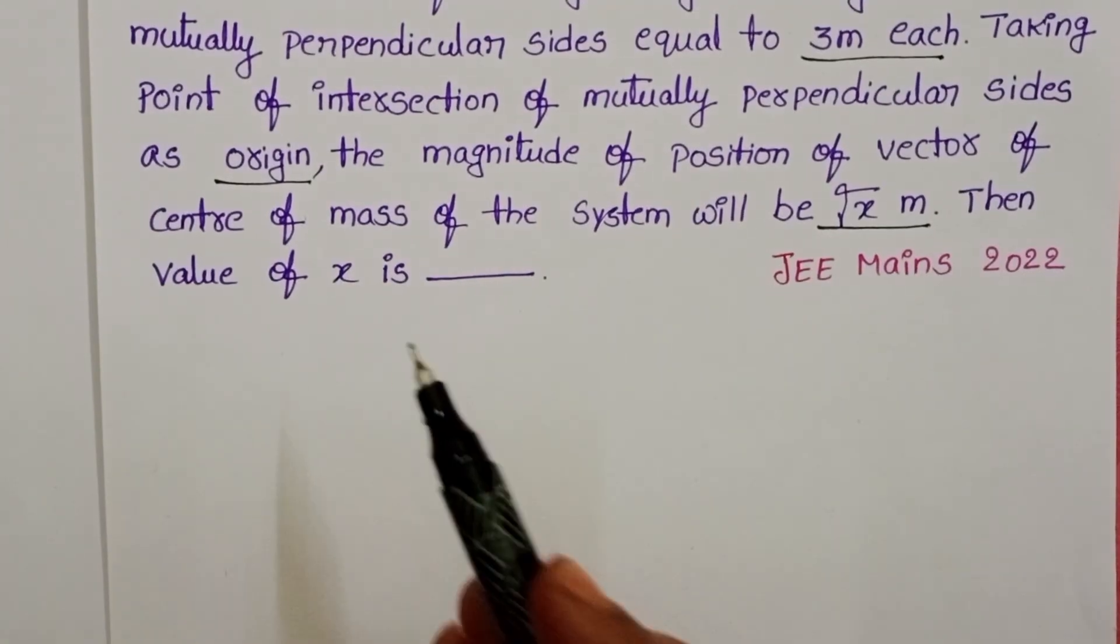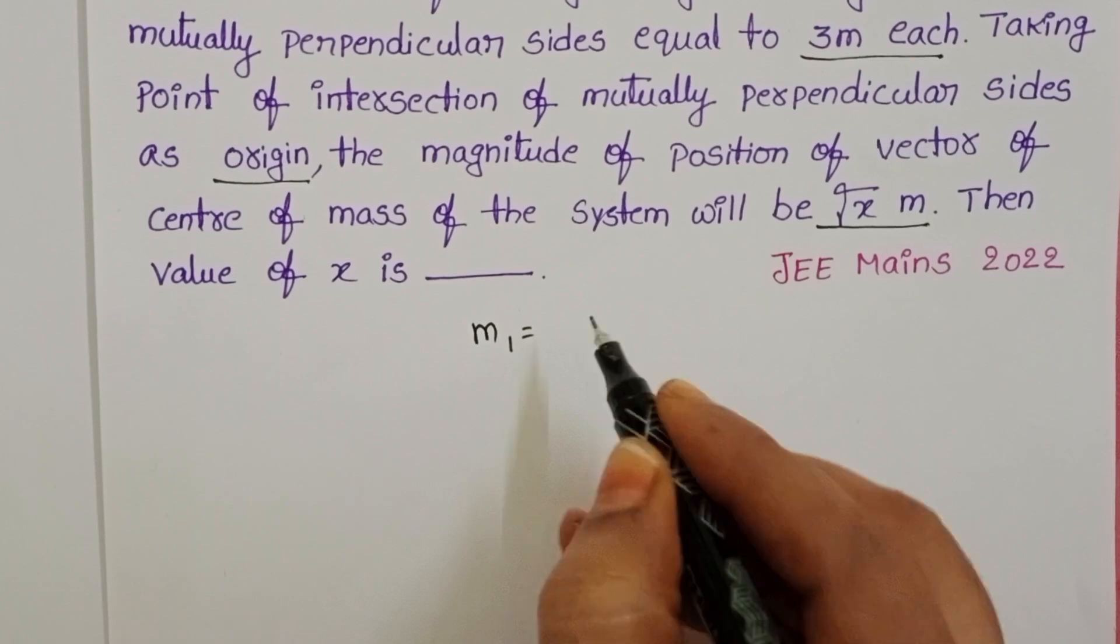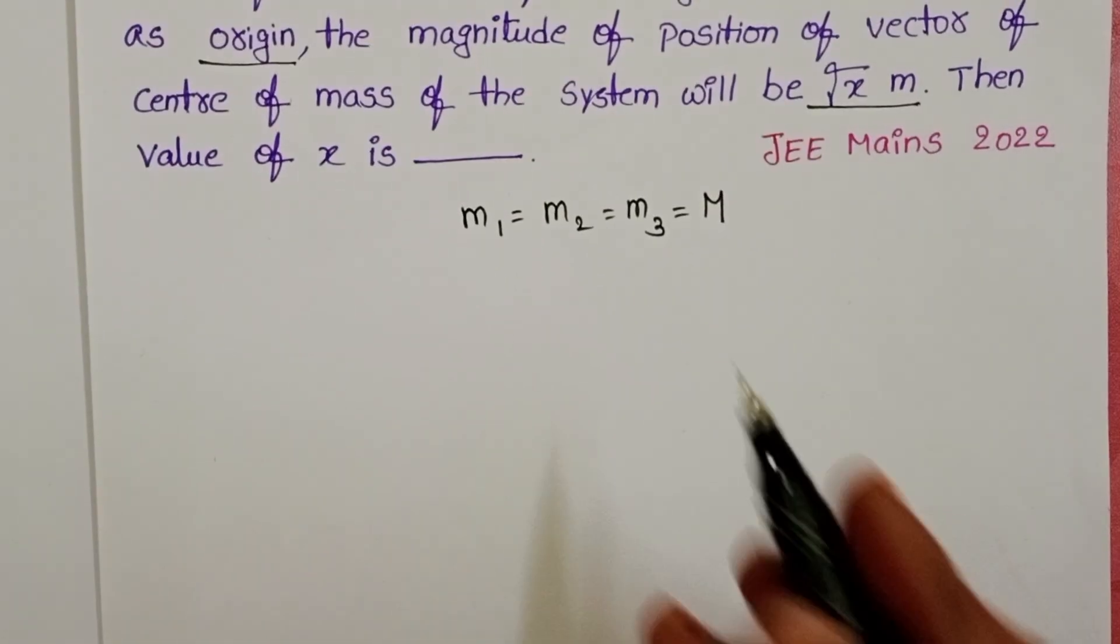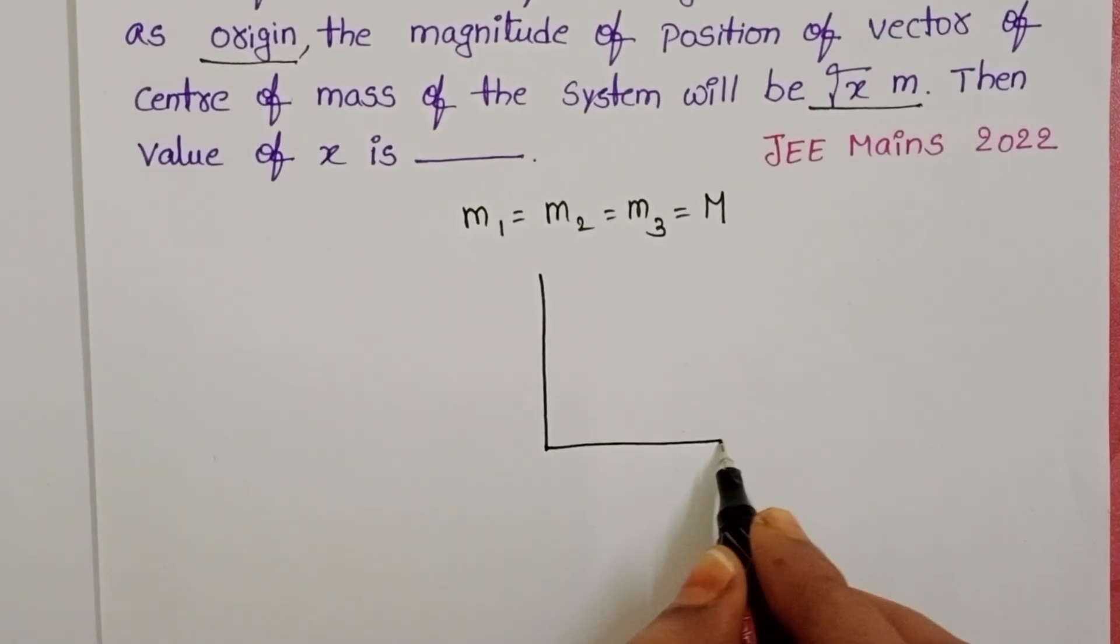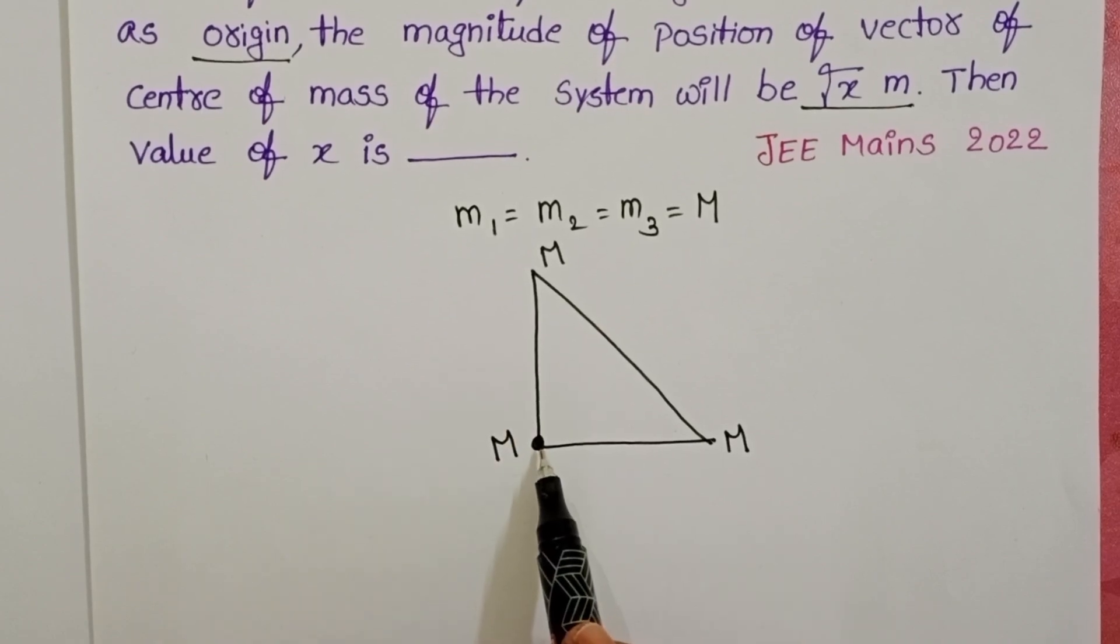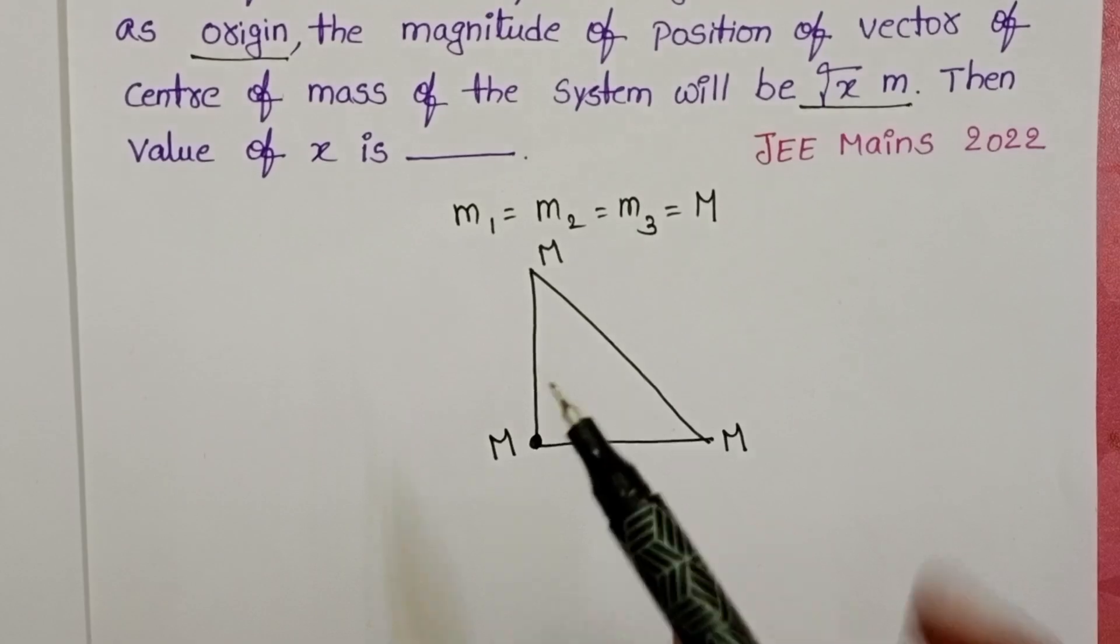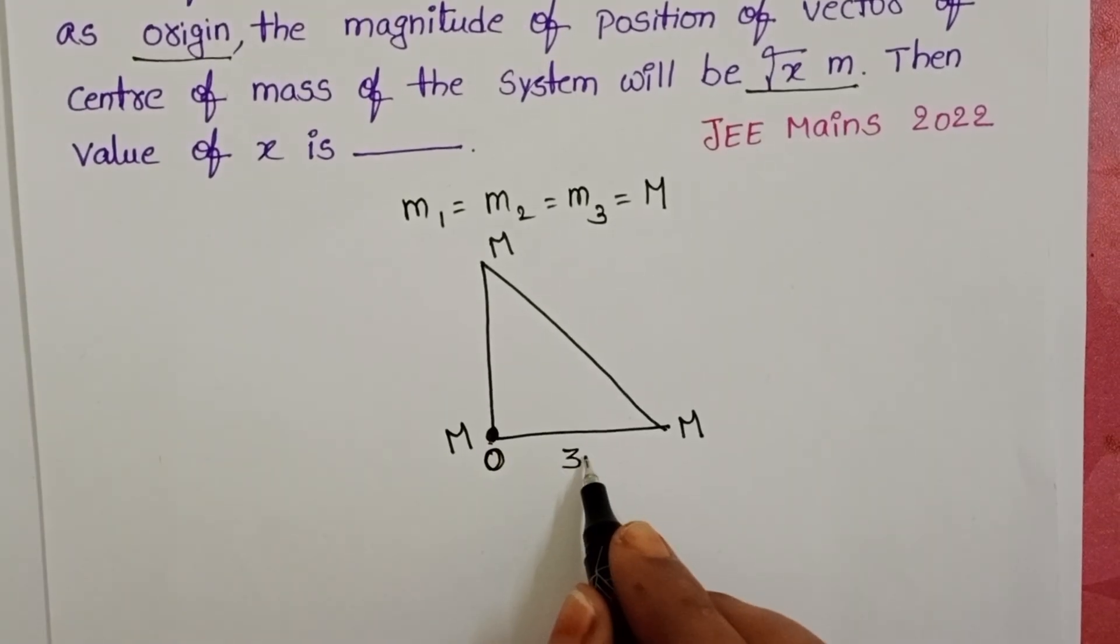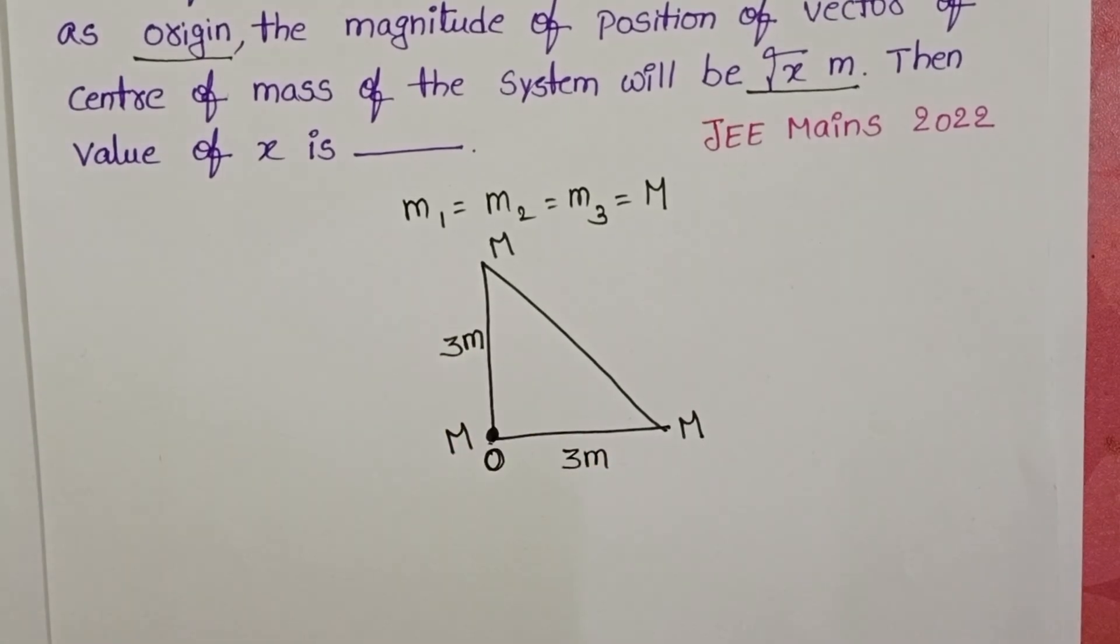In this question, three identical particles, mass of each particle is M. These three particles are placed at the corners of a right angled triangle. These two lines are mutually perpendicular to each other. In the given problem, we have to take this point as the origin. This is 3 meters and here this one also 3 meters.